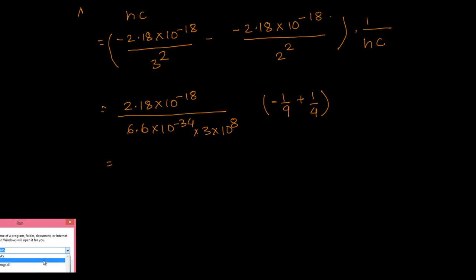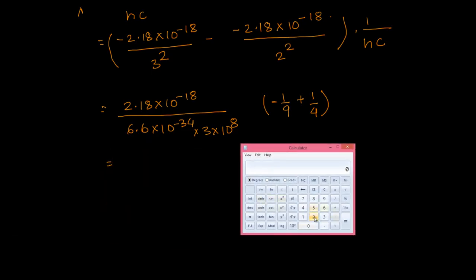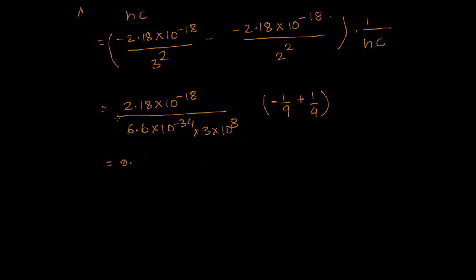Let's do the numerical calculation. Taking 2.18 divided by 6.6 divided by 3 gives approximately 0.11. For the powers of 10: 10 to the power of minus 18, divided by 10 to the power of minus 34, times 10 to the power of 8 — that gives 10 to the power of 8. And 1/4 minus 1/9 equals 5/36, so we get 0.11 times 5/36, which is 0.55 over 36.